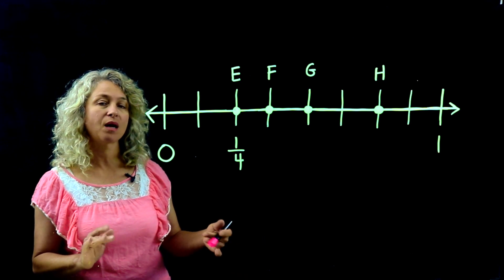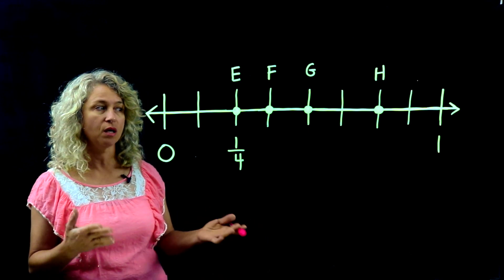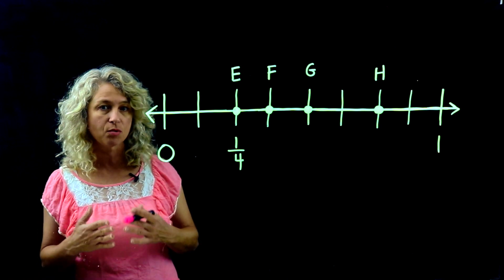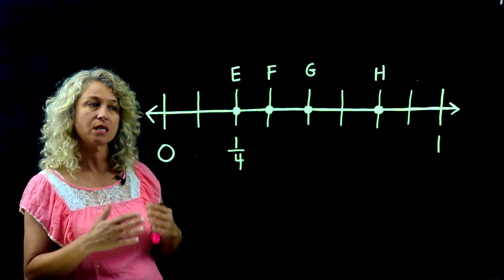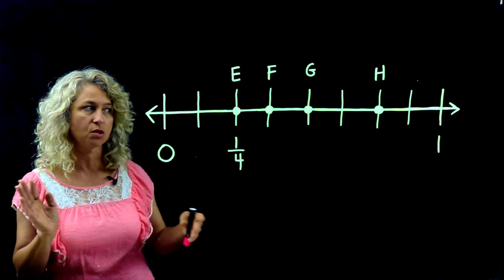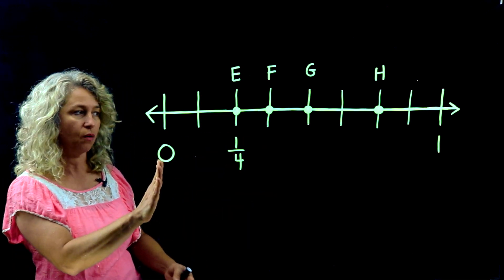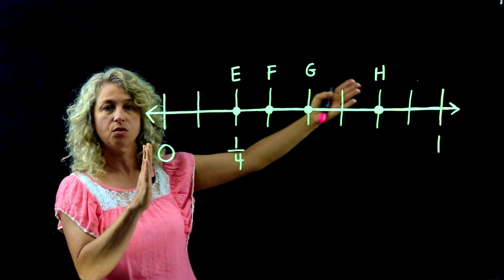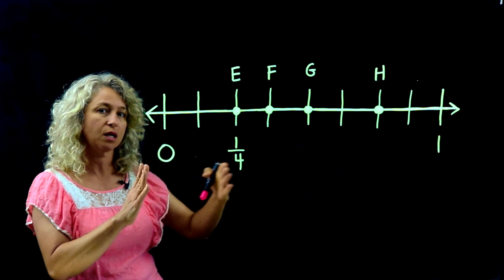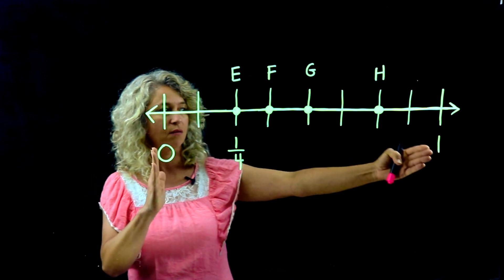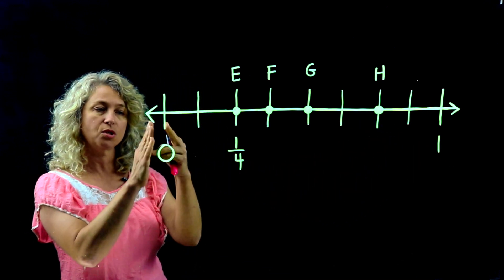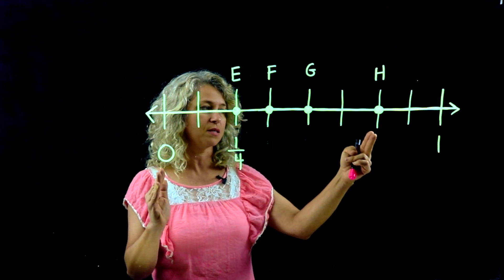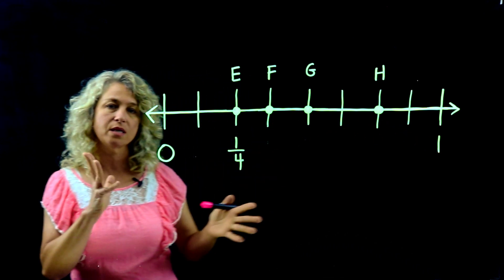What if you're given a number line and asked a specific question? Before you can answer, you have to label the points. To label them, count the tick marks to see how many equal spaces are between the whole numbers. Look between zero and one — the number line might go zero, one, two, three. Count the equal spaces: don't count the first one, that's zero. One, two, three, four, five, six, seven, eight.